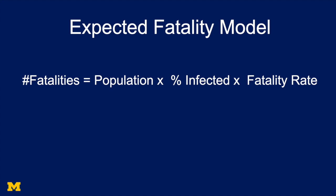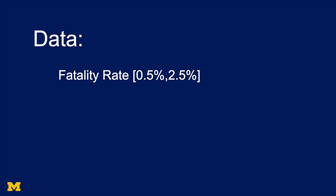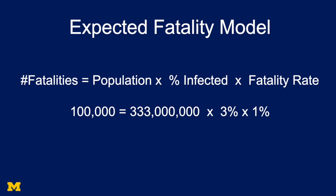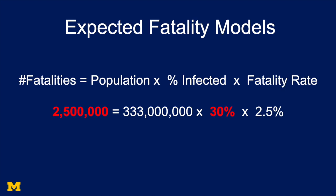These models are really simple. They rate the number of fatalities in an equation: fatalities equal population times the percentage infected times the fatality rate. The data we have so far suggests the fatality rate for COVID-19 is between half a percent and 2.5%. With a 1% fatality rate and only 3% of the US population of 330 million infected, we have about 100,000 fatalities. But if 30% get infected and the fatality rate is 2.5%, we end up with 2.5 million fatalities — a huge difference.